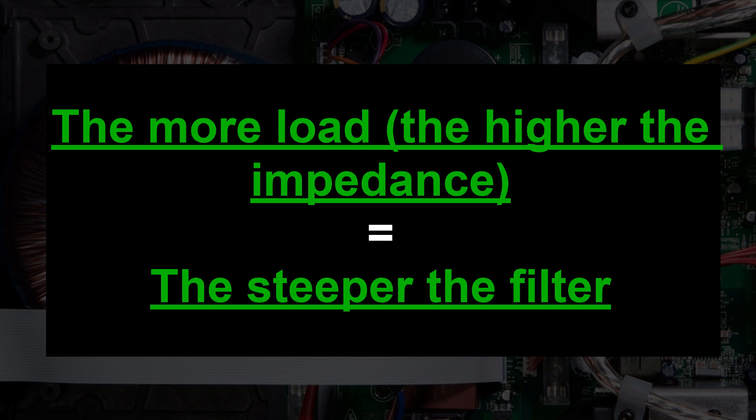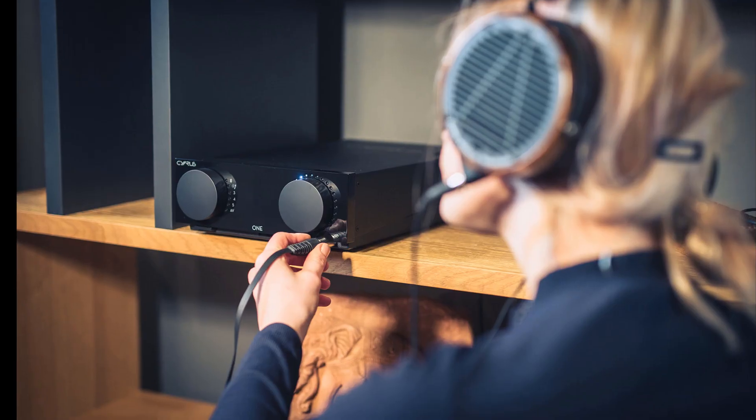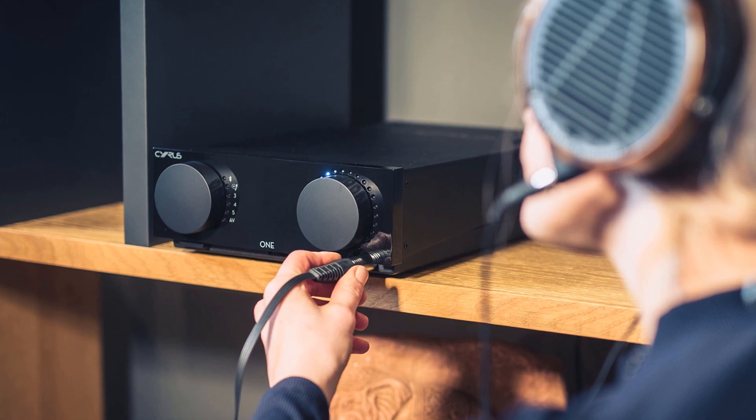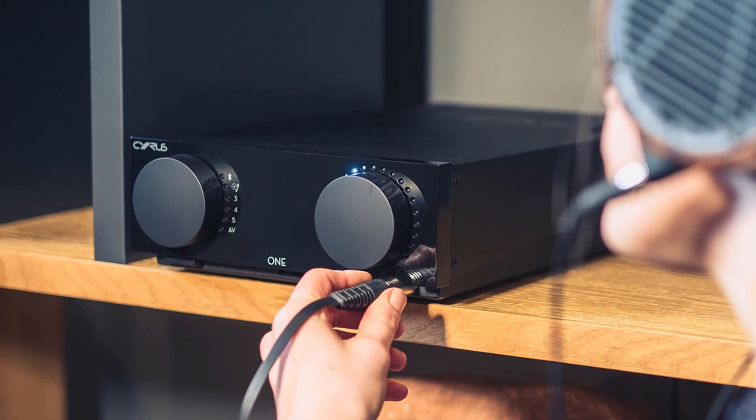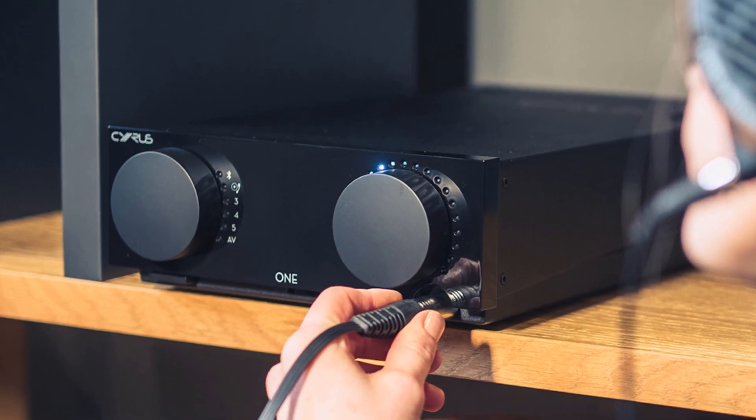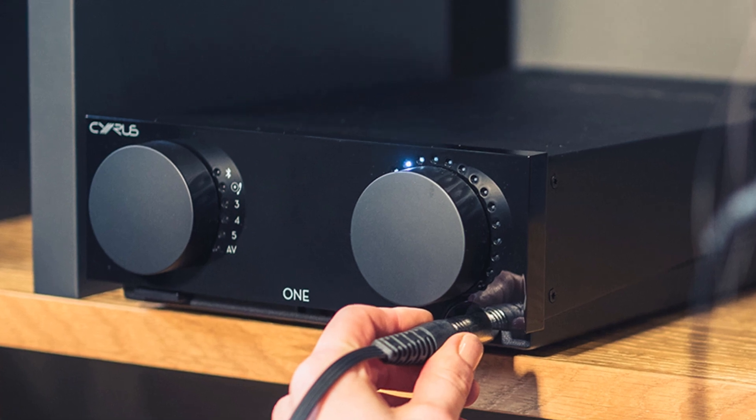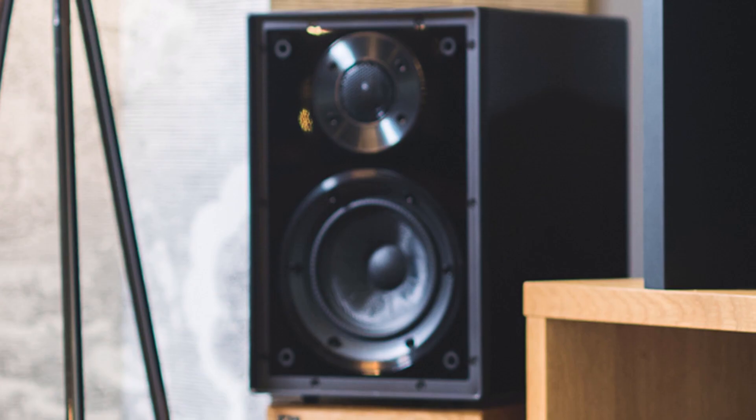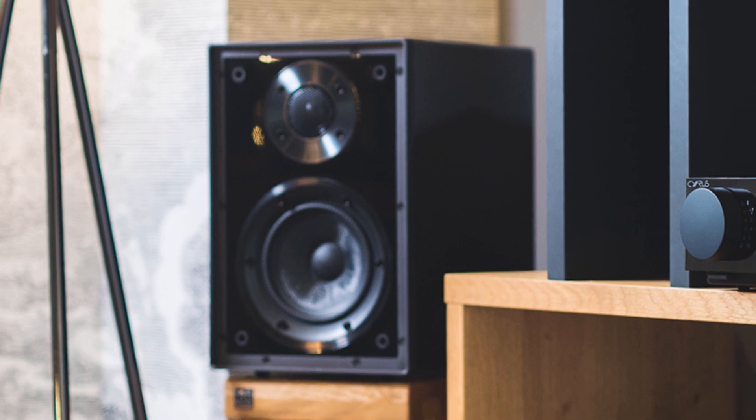You may have come across reviews saying that Class D sounds digital, too bright, or too dull. This is a possible consequence of a mismatch between speakers and the amp. So in an ideal situation when designing an amplifier, we need to know the characteristics of speakers that the amp will drive. Otherwise, the combination of the amp and particular speakers may not work too well.